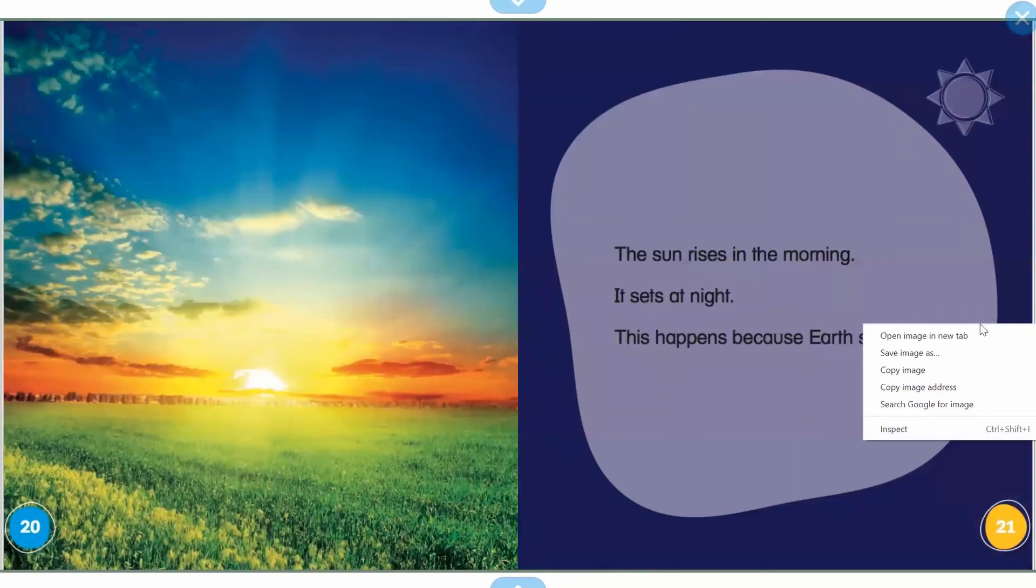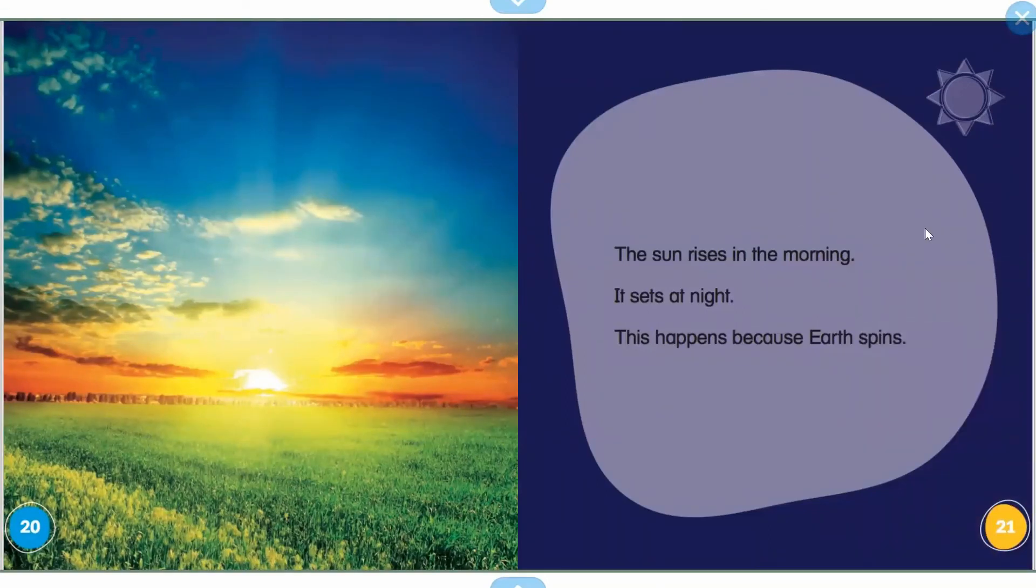The sun rises in the morning and it sets at night because this happens because the Earth spins. So the sun does not move. Even though it looks like it's moving across our sky, the sun stays still. It's the Earth that's spinning and it moves and it makes the sun look like it's moving.